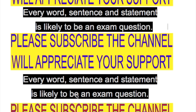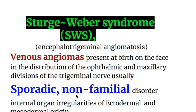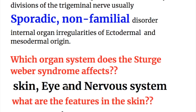Sturge-Weber syndrome, also known as encephalotrigeminal angiomatosis, presents as venous angiomas at birth on the face in the distribution of the ophthalmic and maxillary division of the trigeminal nerve. It is a sporadic, non-familial disorder with internal organ irregularities of ectodermal and mesodermal origin.